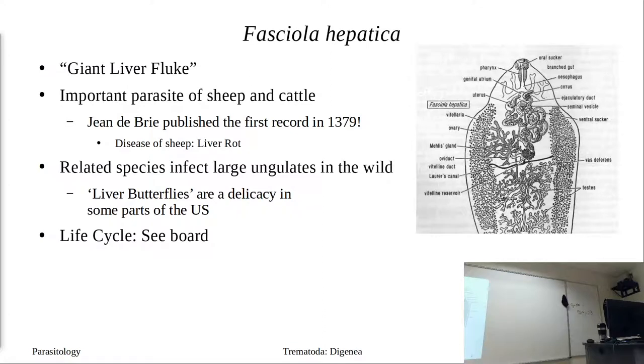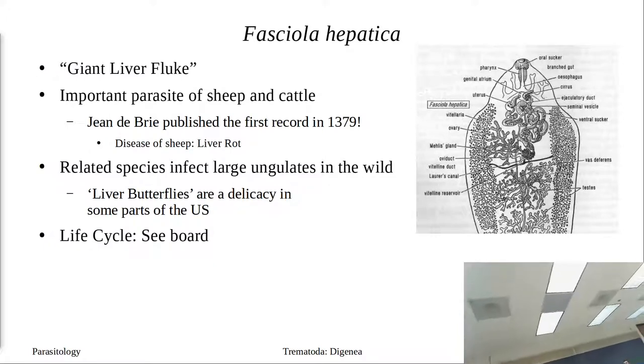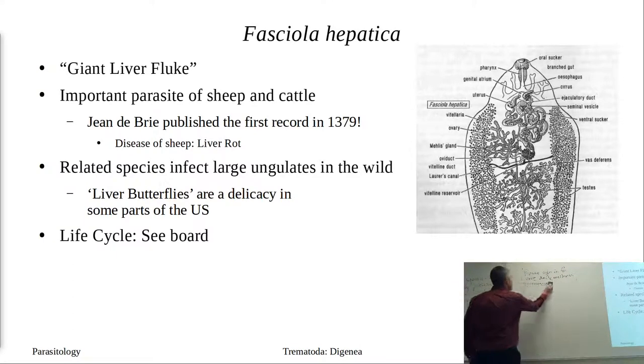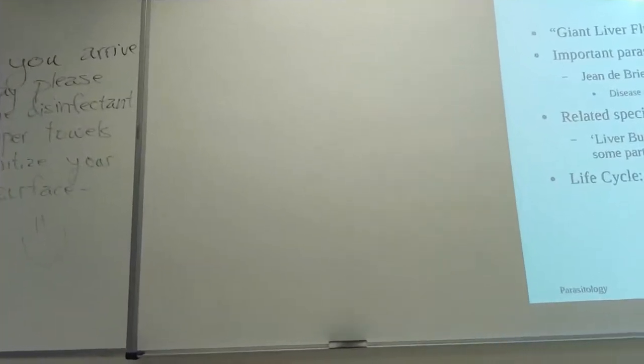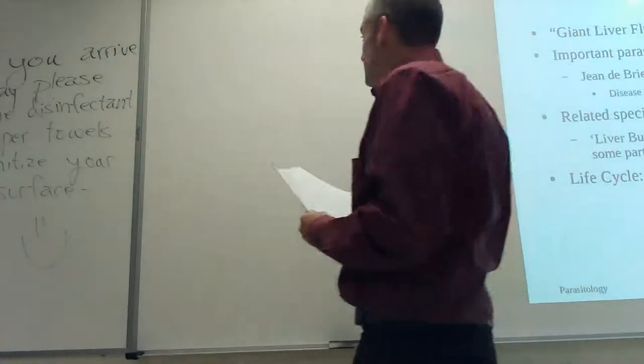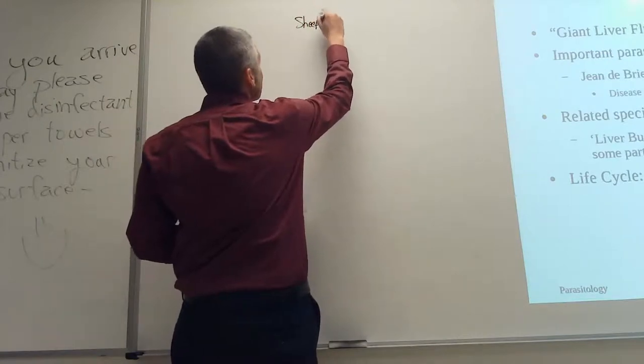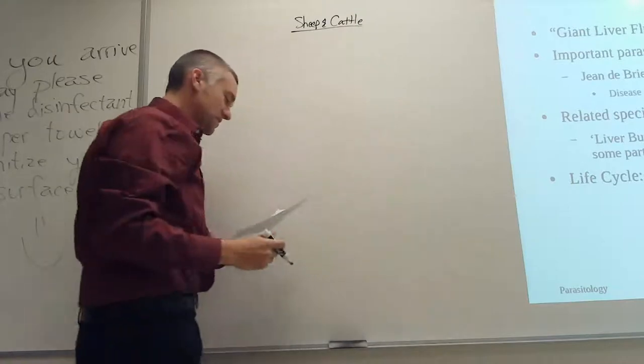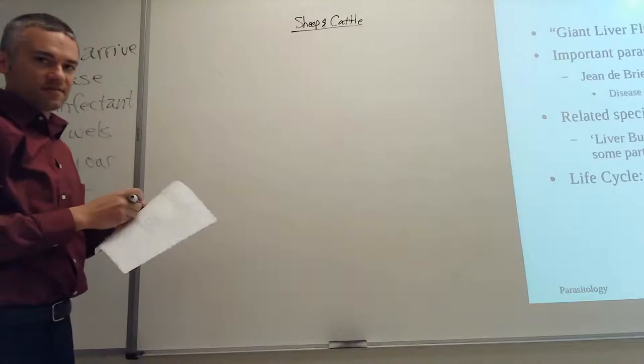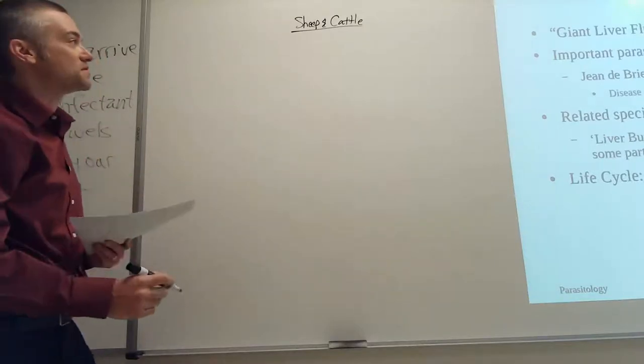The giant liver fluke. And we're going to have one of those people watching on YouTube get sick. All right. So that's your sheep and cattle. And in the sheep or cattle it's going to live basically in the liver. All right, so a bile duct is going to be its final site of infection. So we're going to start with our sheep or cattle.